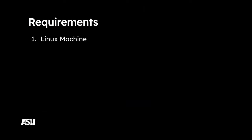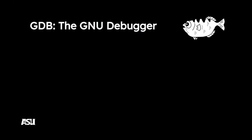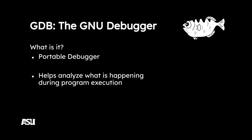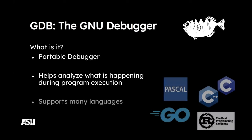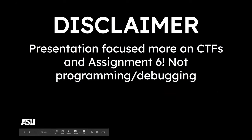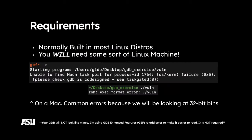A lot of people work around the Linux machine requirement, but this actually matters. The server is using Ubuntu 18.04 — you can use basically any other Linux distribution. GDB is the GNU Debugger. It's portable and helps analyze your program's execution. If you're taking CSC 340, this is a really helpful tool to see where your program dies. These presentations are focused on the CTF and assignment six, not so much general programming.